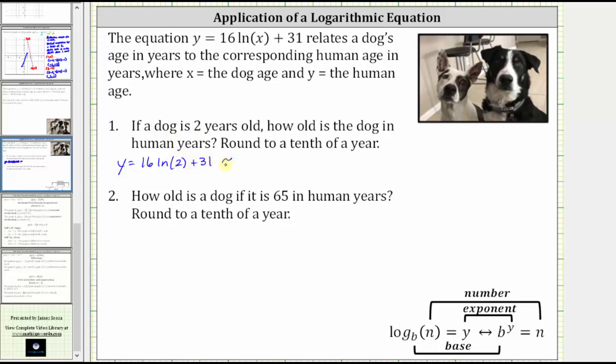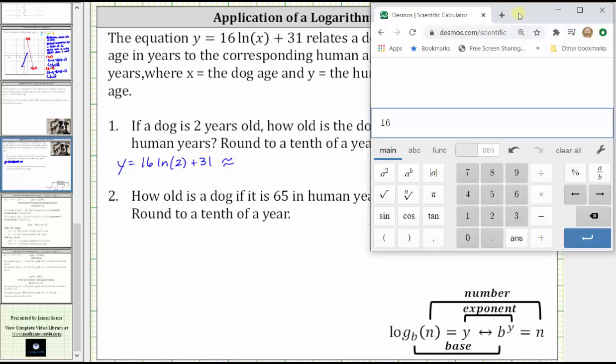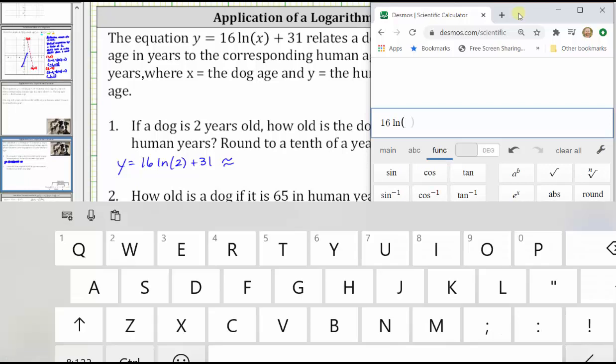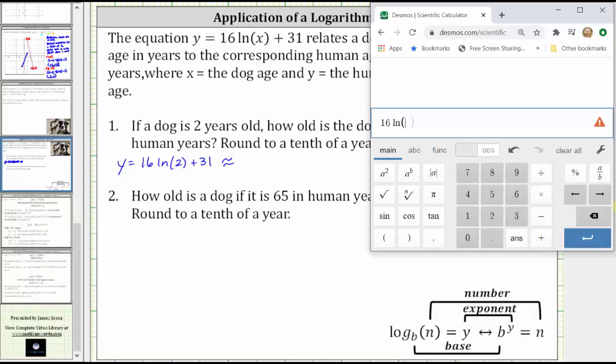And now we go to the calculator and get our decimal approximation. We enter 16, click functions, click ln for natural log, go back to the main menu, click two, close parenthesis, plus 31.